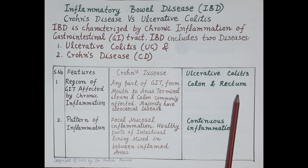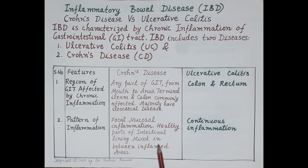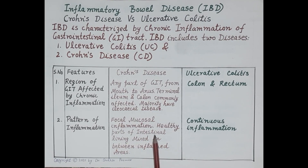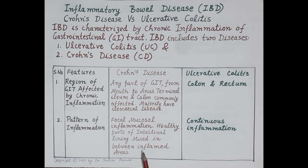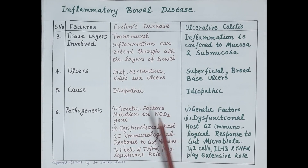In ulcerative colitis, the chronic inflammation is restricted to the wall of the colon and rectum. Crohn's disease shows skip lesions — that is, patchy inflammation where patches of inflammatory tissue alternate with healthy tissue. Ulcerative colitis, in contrast, shows continuous inflammation.